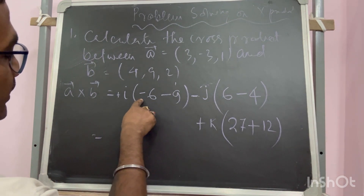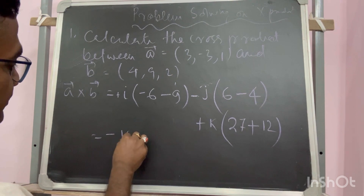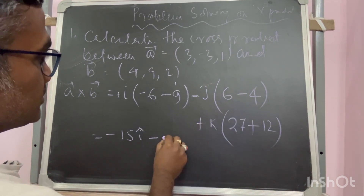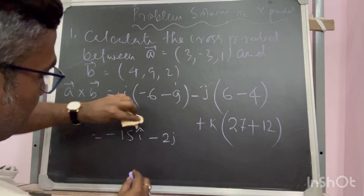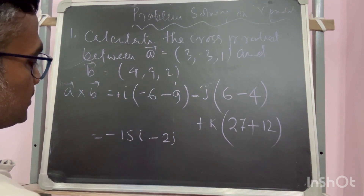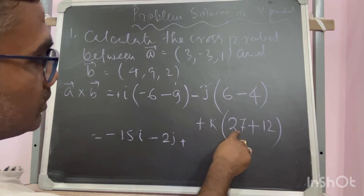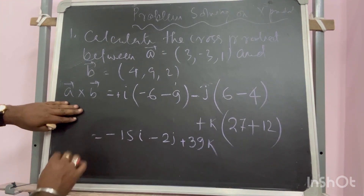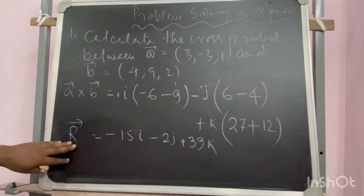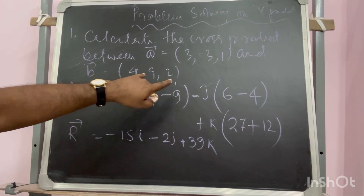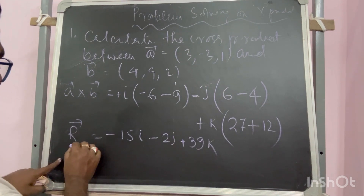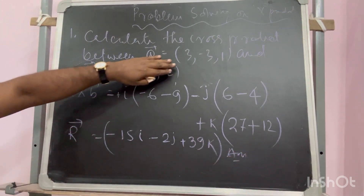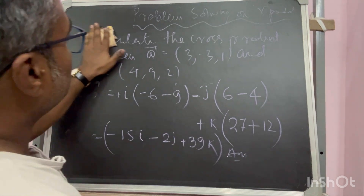So the result is: (-6 - 9) = -15 along the x unit vector I, then (6 - 4) = 2J, and 39K. So this resultant vector R of A cross B is (-15I + 2J + 39K). The cross product is also a vector. This is the answer for the cross product of A and B. I will move on to the next problem.